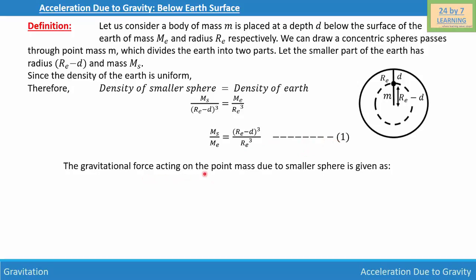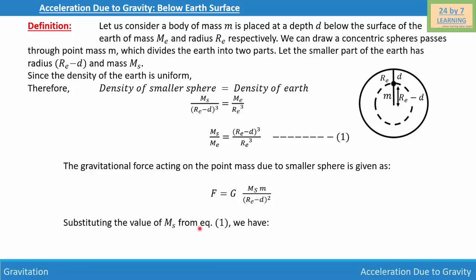The gravitational force acting on the point mass m due to the smaller sphere is given by F = G·m_s·m / (r_e minus d)^2, where m_s is the mass of the smaller sphere. Substituting the value of m_s from equation 1, we get F = G · [(r_e minus d)^3 / r_e^3] · m_e · m / (r_e minus d)^2.